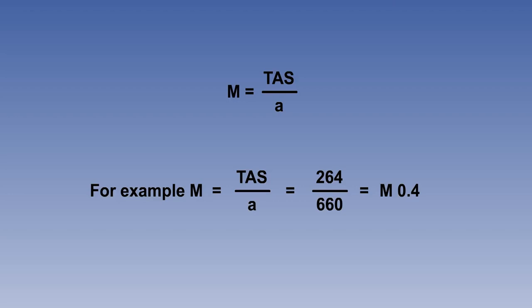For example, if the aircraft's TAS is 4 tenths of the speed at which sound pressure waves propagate through the air around the aircraft, the Mach meter will register Mach point 4.